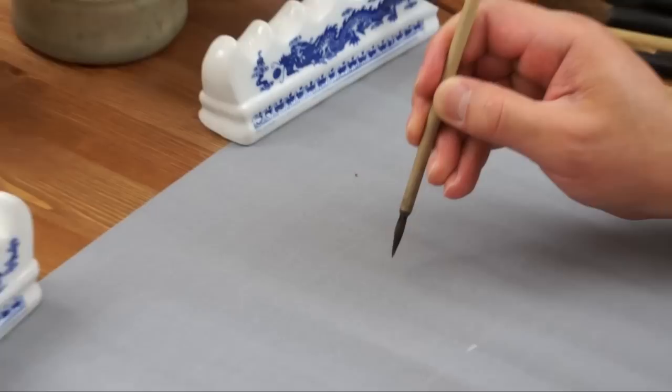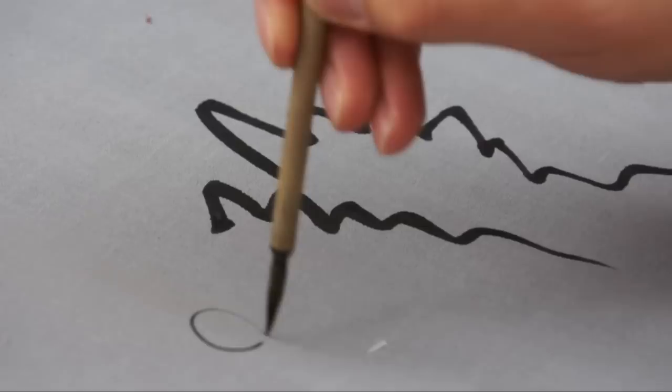The first one is a small detail brush. It is made of weasel hair. You can see you can do fine lines. You can draw very delicate lines or use as a signature brush.